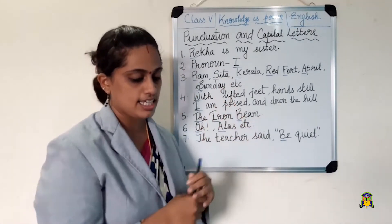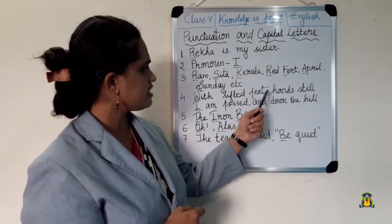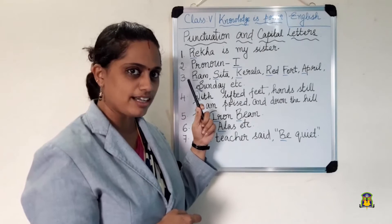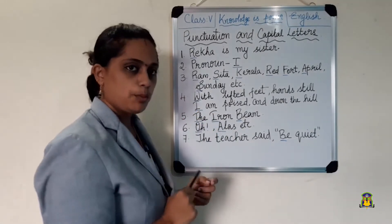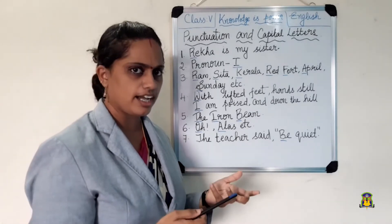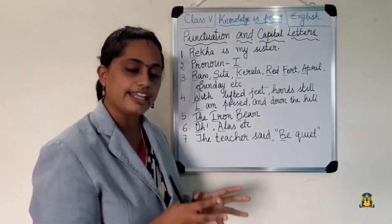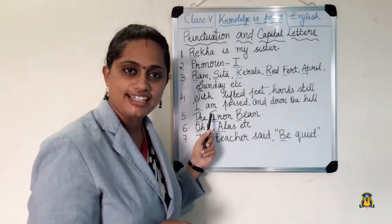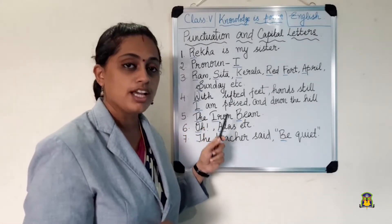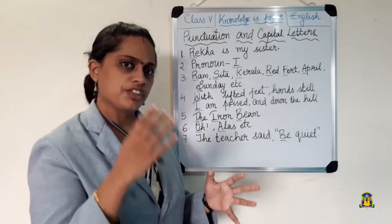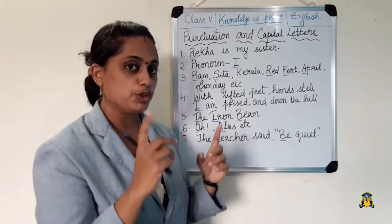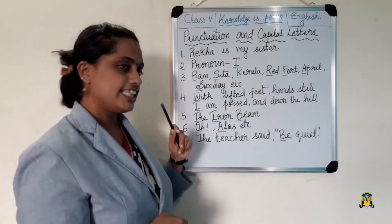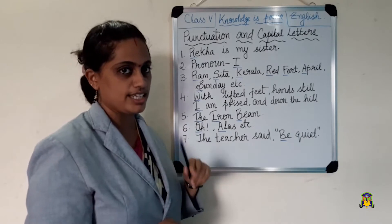The fourth instance: 'With the lifted feet, hands still, I am poised and down the hill.' Do you remember this poem — 'Downhill on a Bicycle'? Both letters are written in capital letters. Every new line of a poem will be starting with a capital letter. You can take your English textbook, turn the pages, and see the poems — you will understand this. That is the fourth situation where we use capital letters.